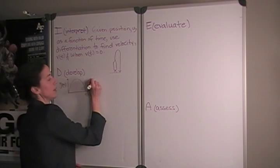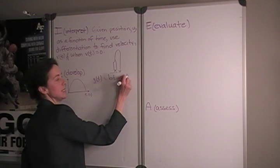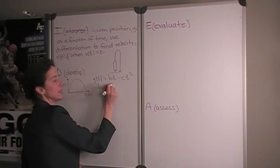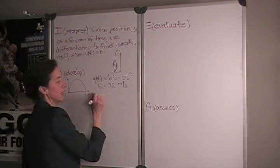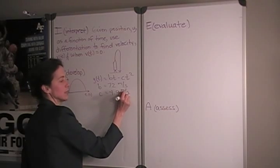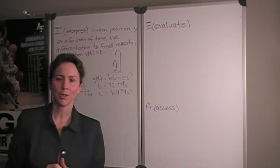Now, we are given the position function y of t equals bt minus ct squared, and we are further given values for b of 72 meters per second, and c is 4.9 meters per second squared. Now, I've changed the value of b a little bit, so you can work this problem on your own later.